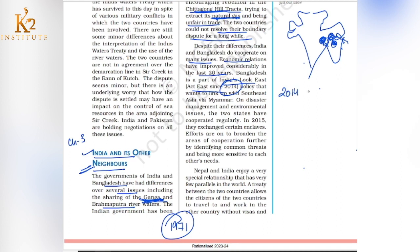Bangladesh is a part of India's look-east policy since 2014. The Indian government adopted a look-east — or act-east — policy focusing on Bangladesh, Myanmar, and South East Asian countries. The idea was not to neglect the eastern world, and Bangladesh is a key part of that policy.